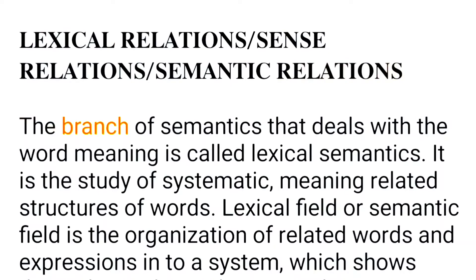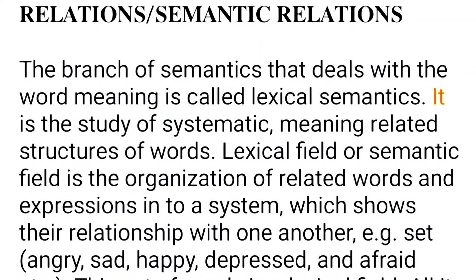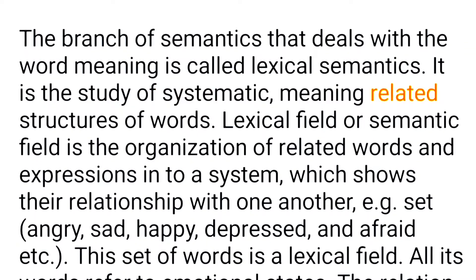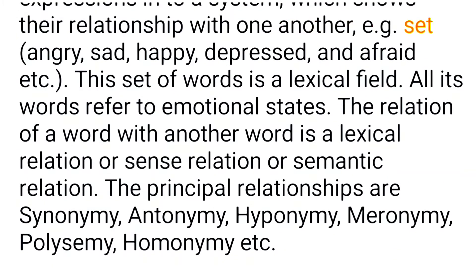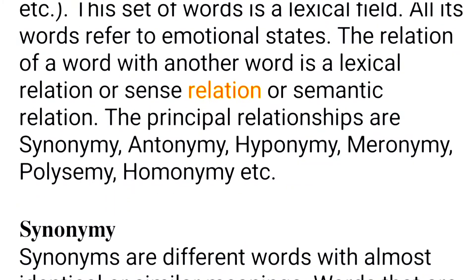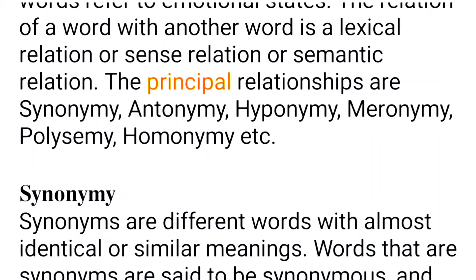Lexical semantics is the branch of semantics that deals with word meaning. It is the study of systematic meaning-related structures of words. A lexical field or semantic field is the organization of related words and expressions into a system which shows their relationship with one another. For example, the set: angry, sad, happy, depressed, and afraid — all refer to emotional states, forming a lexical field. The relation of one word with another is called a lexical relation, sense relation, or semantic relation. The principal relationships are synonymy, antonymy, hyponymy, meronymy, polysemy, and homonymy.